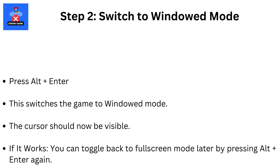Step 2: Switch to windowed mode. Press Alt+Enter — this switches the game to windowed mode and the cursor should now be visible. If it works, you can toggle back to fullscreen mode later by pressing Alt+Enter again.